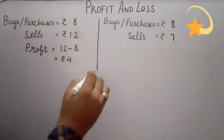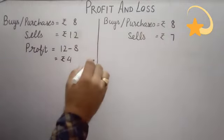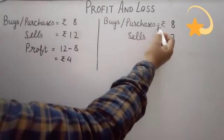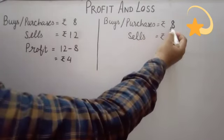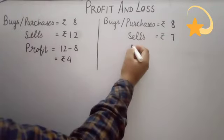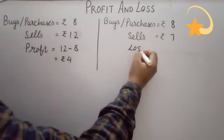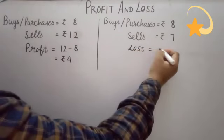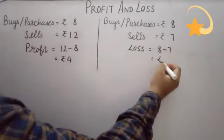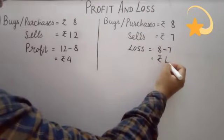In this case he has loss. Why? Because he purchases a pen at a higher price and sells it at a lower price. Now what is the loss? 8 minus 7 is equal to Rs.1.